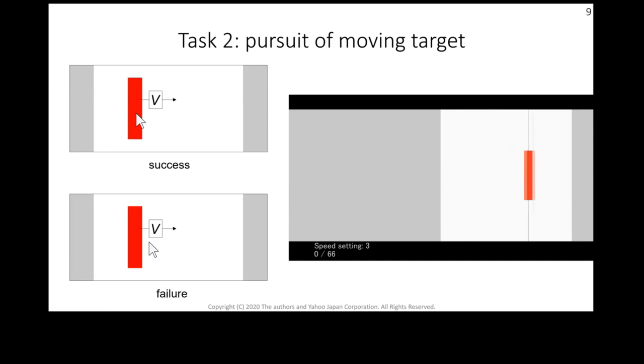Next, we derive a model for pursuit of a moving target. The target automatically moves rightward and users have to keep the cursor inside the target.